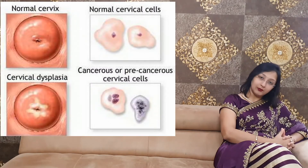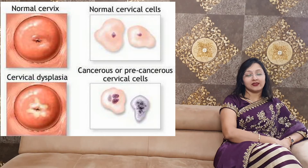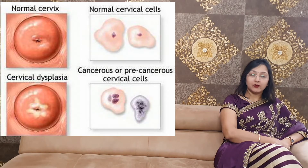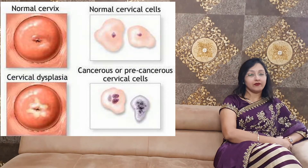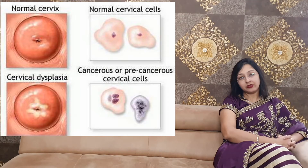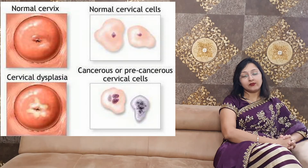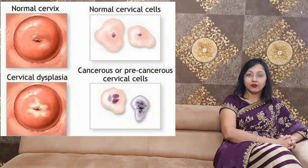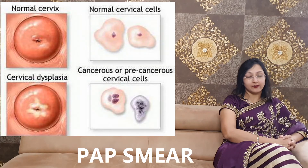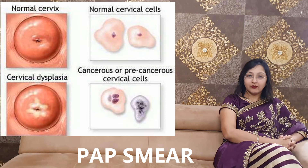How can we prevent cervical cancer? We can prevent it by routine checkups and by doing routine pap smear examinations. Cervical cancer is detected by a per-speculum examination. With regular per-speculum examination, we can find certain changes on the cervix that indicate a possibility of cervical cancer development. Pap smear is very helpful in this.